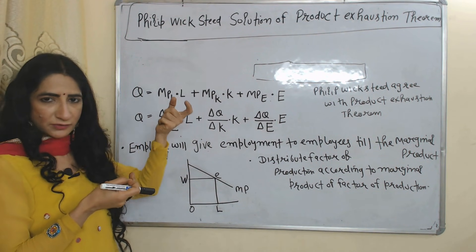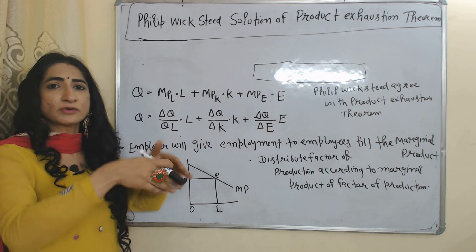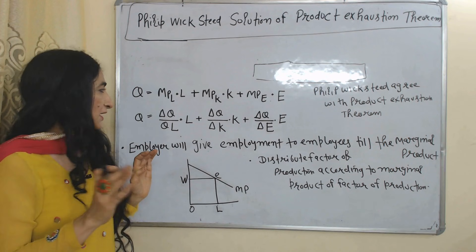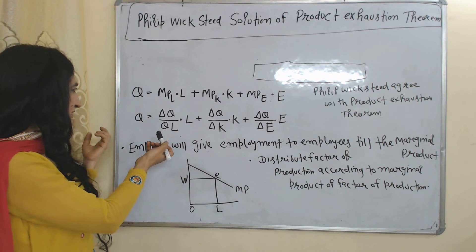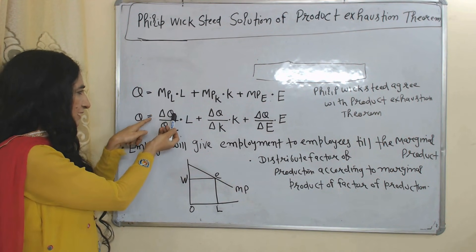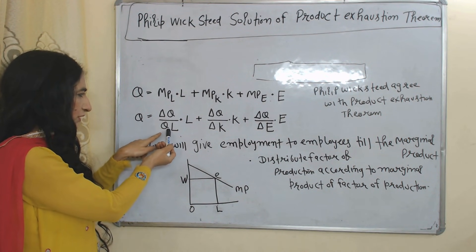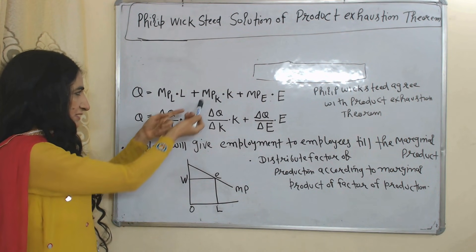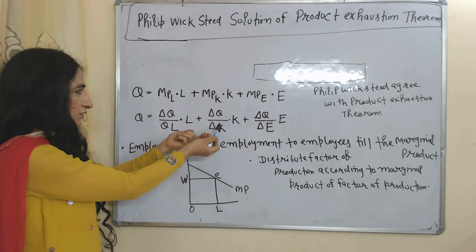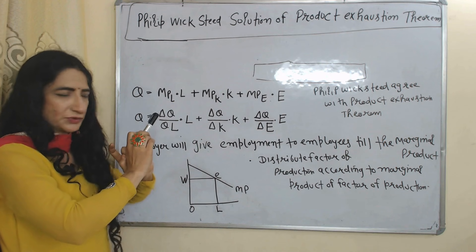When we multiply the marginal product of a factor of production with its number, it becomes equal to the contribution of that factor of production. We can also write marginal product of labor in the form delta Q over delta L, and similarly for marginal product of capital and marginal product of entrepreneurship.